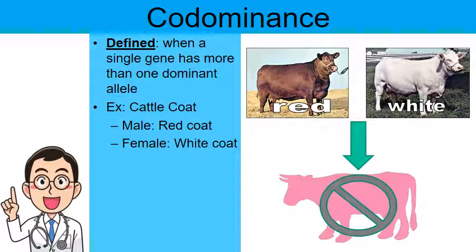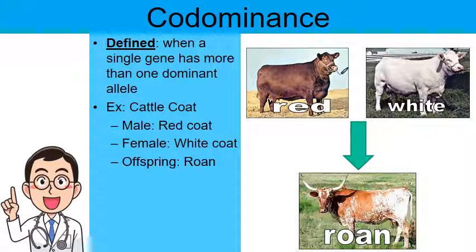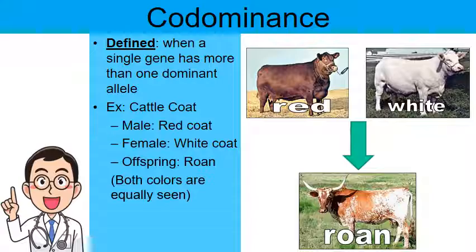In a greater visual example, codominance would look like this. This is the color pattern known as roan. Notice there are patches of red at the same time as patches of white — both colors are equally expressed. Has red overpowered white? No. Has white overpowered red? No. They're both equally expressed at the same time.